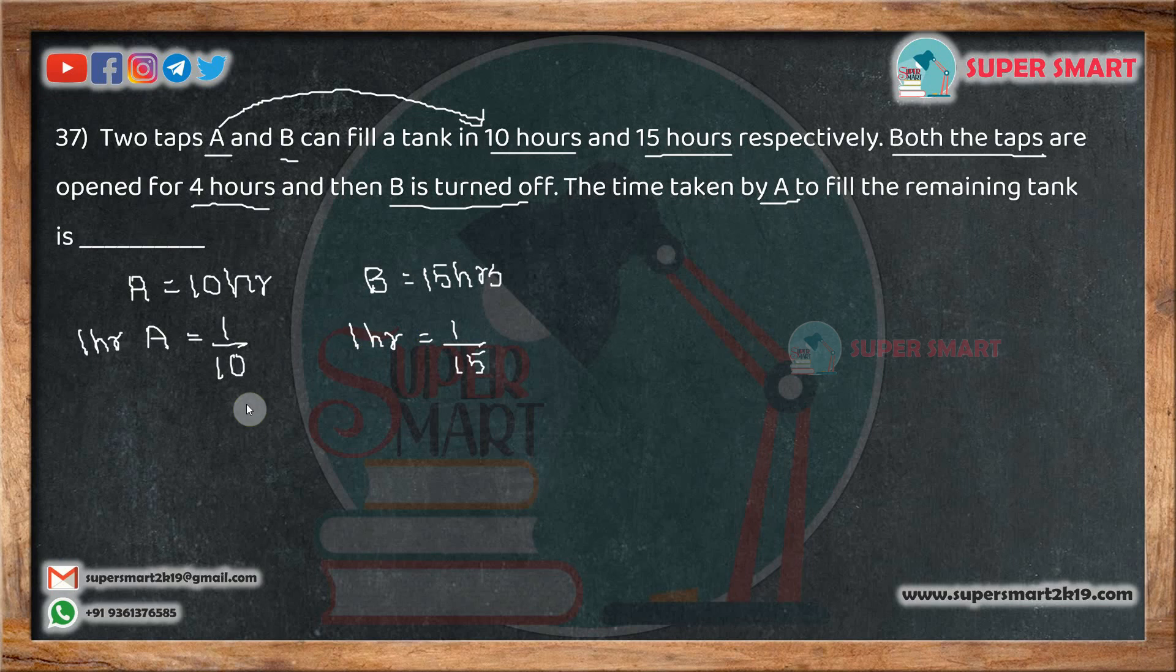If both do the work together in one hour, it is 4 hours. 1 by 10 plus 1 by 15. So, 15 plus 10 divided by 150. The answer is 25 by 150. 25 and 150 divided by 25 is 6. So the two taps complete 1 by 6 work in one hour.